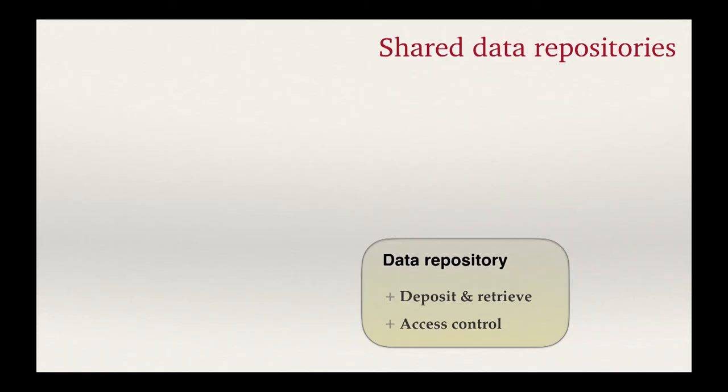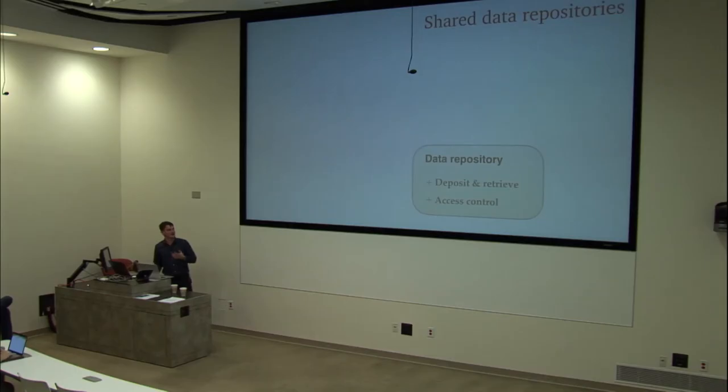If asked to build a data pipeline, most people think of it as a data repository — a common place to put files, organized by naming conventions or folders. A simple data repository does a couple of basic functions: you put things in and take them out in the same form, with some access control. This is what most NIH-sponsored repositories for shared data do, and it's what most people think of when they think about data sharing.